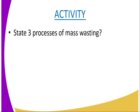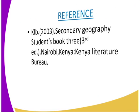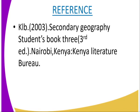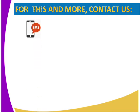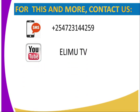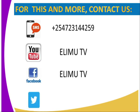The activity for today: you are supposed to state three processes of mass wasting and explain them — state them, explain them, and write where they can be found. For more information, you can visit the KRB 2003 Secondary Geography Student Book 3. You can also contact us through SMS, YouTube, Facebook, or Twitter. Otherwise, stay tuned to Elim TV. Thank you.